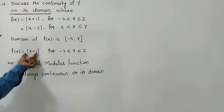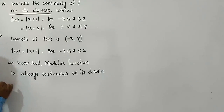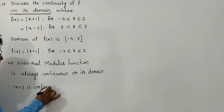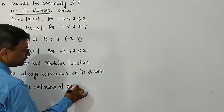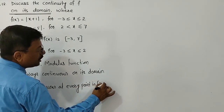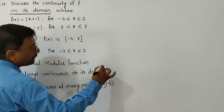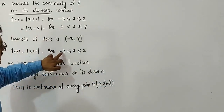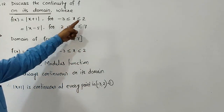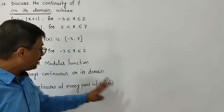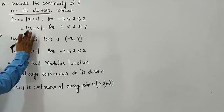Therefore, |x+1| is continuous at every point in the semi-open interval [-3, 2). That is, from -3 to 2, but not including 2, because on the right side of 2 the function is different. So |x+1| is continuous from -3 up to 2.